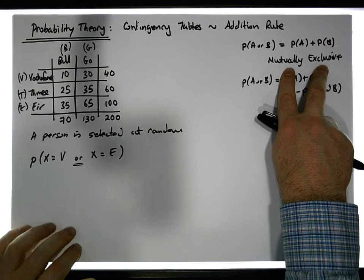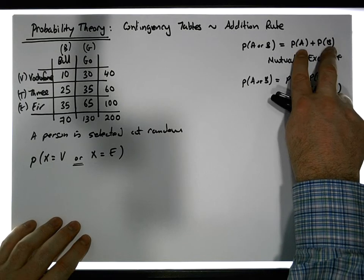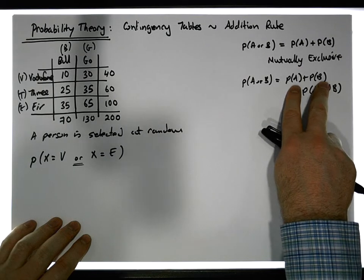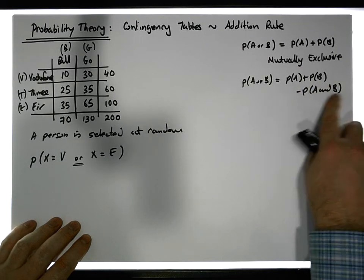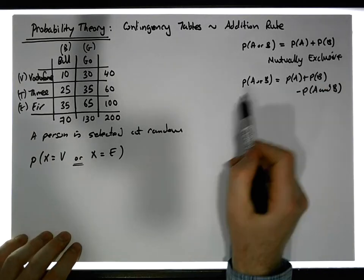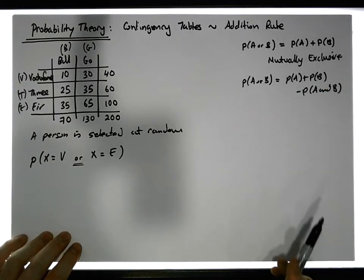Irrespective of whether they're mutually exclusive or not, we still need to calculate the two individual marginal probabilities. But in the case where they're not mutually exclusive, we have to take away the joint event.